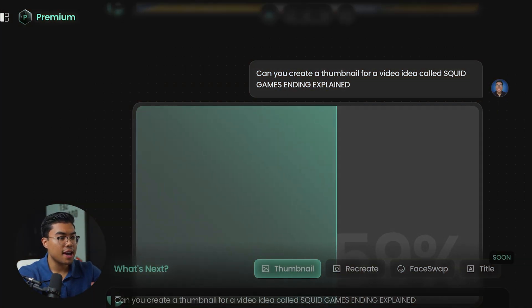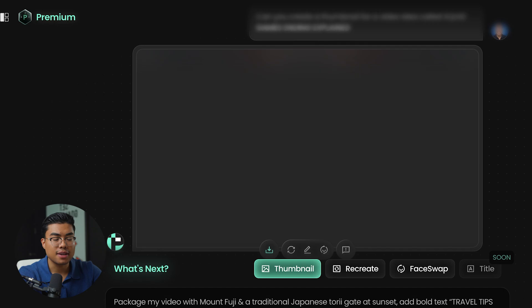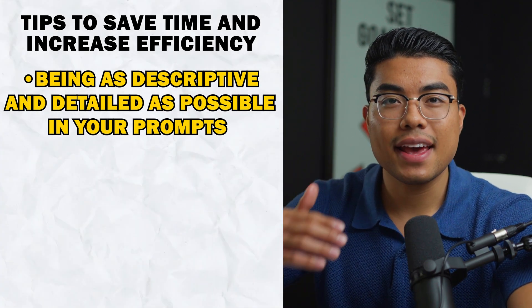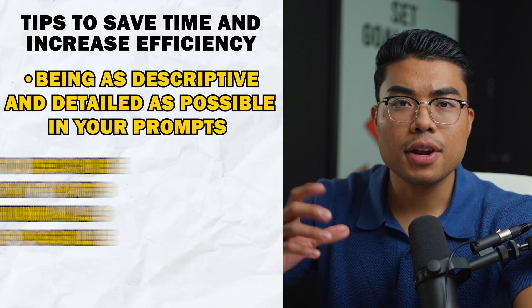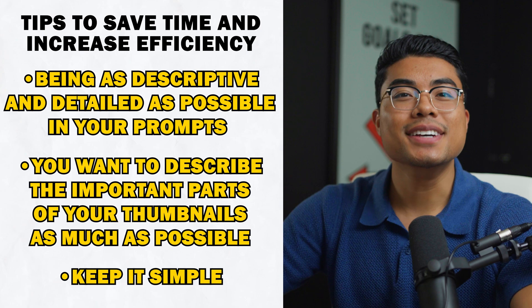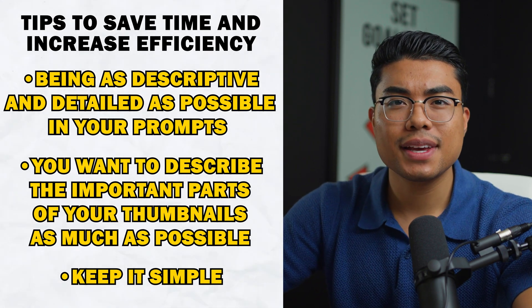I asked Pixels: 'Can you create a thumbnail for a video called Squid Games ending explained?' Here's what it came out with — and that was just off a generic prompt. After using Pixels, here are a few tips that'll save you a lot of time. Number one: be descriptive and as detailed as possible with your prompts. Number two: describe the most important part of your thumbnail as much as possible. Number three: keep it simple — the more you overcomplicate it, the more the AI gets confused. It might take a few tries, but with the redo and edit buttons, it's way simpler than going back and forth with a thumbnail designer that takes days or weeks.